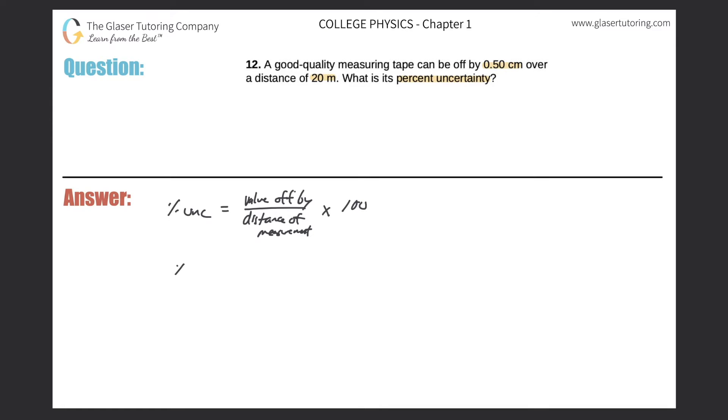So if we use this simple model, the percent uncertainty should be 0.50 centimeters divided by 20 meters times 100.